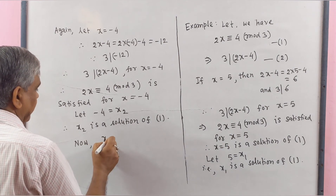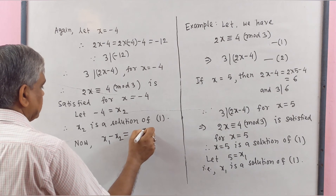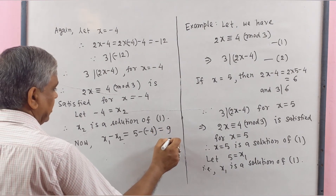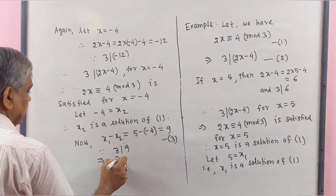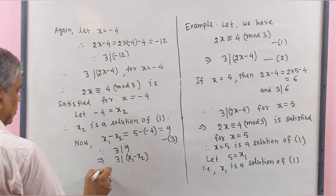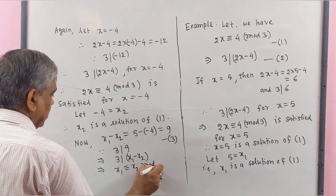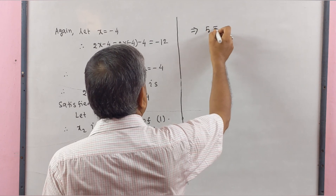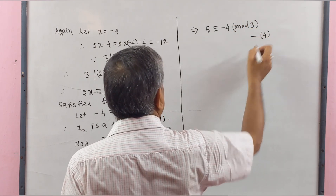Now X₁ − X₂ = 5 − (−4) = 9. Since 3 divides 9, we have X₁ − X₂ divisible by 3, which implies X₁ ≡ X₂ (mod 3), i.e., 5 ≡ −4 (mod 3). Therefore X = 5 and X = −4 are congruent solutions.